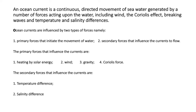The Coriolis force causes water to move to the right in the northern hemisphere and to the left in the southern hemisphere. These large accumulations of water and the flow around them are called gyres, which produce large circular currents in all ocean basins. One such circular current is the Sargasso Sea, which is in the northern Atlantic Ocean.